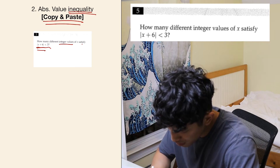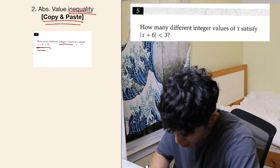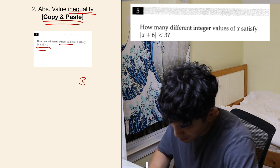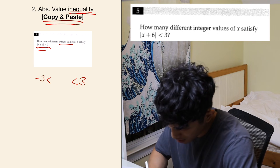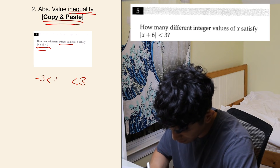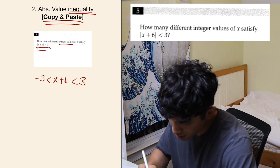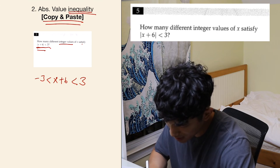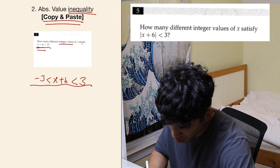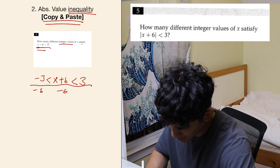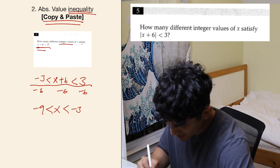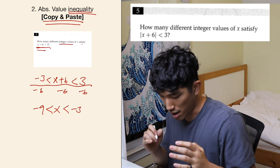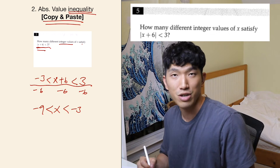Here's what I mean. You see that three on the right side — you're going to copy and paste it to the other side and make it negative. In the middle, you put the left side without the absolute value. So it looks something like: negative three is less than X plus six, which is less than three. Then you subtract six from all parts: minus nine is less than X, and X is less than minus three. This tells us that X must be between minus nine and minus three.